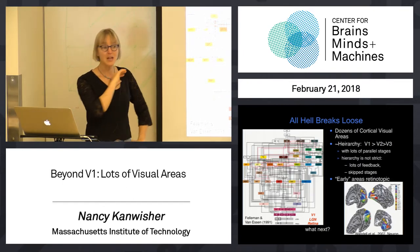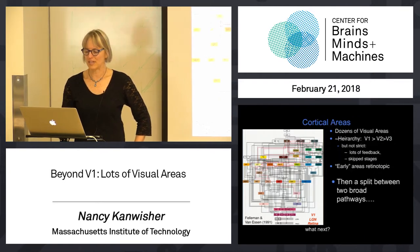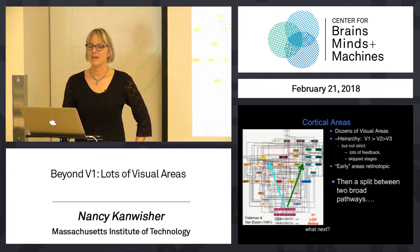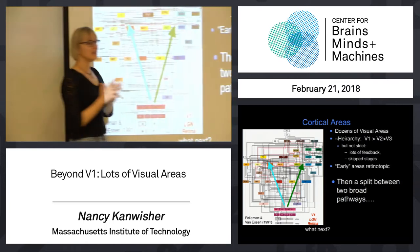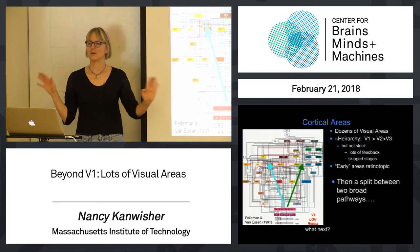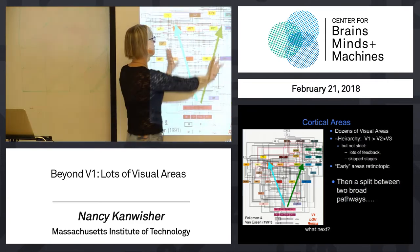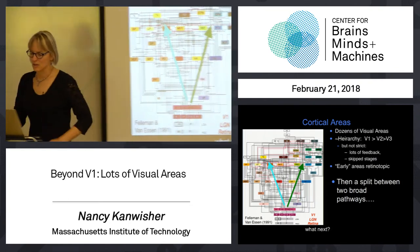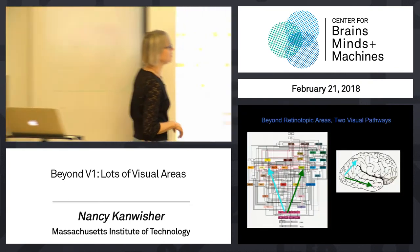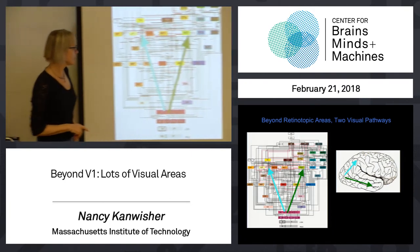So there are lots of retinotopic areas that happen after V1, and then there's a whole bunch of stuff that happens after that. Very loosely, we can think of this whole big mess as divided into two main processing streams. Those processing streams are not totally segregated — they actually overlap — but roughly, you can think of two streams in the human brain that go down into the temporal lobe and up into the parietal lobe.